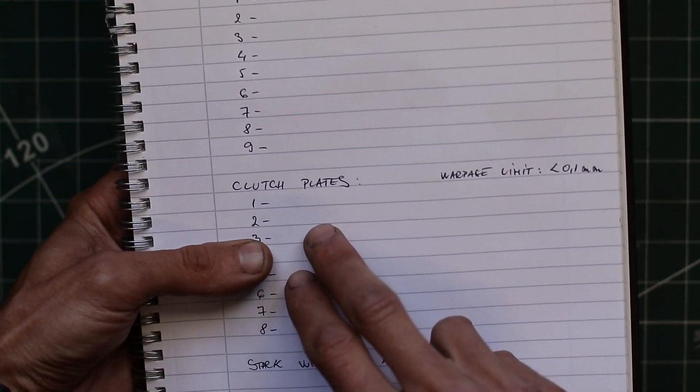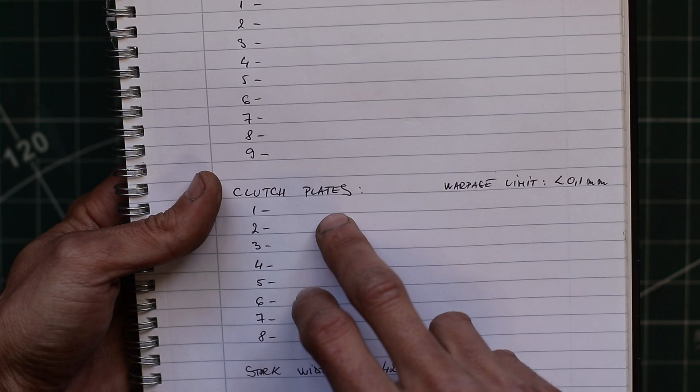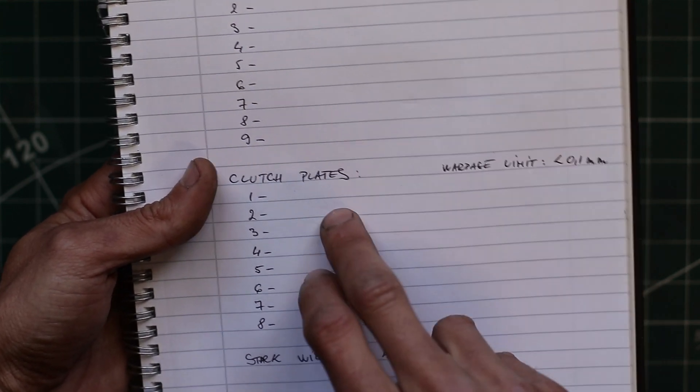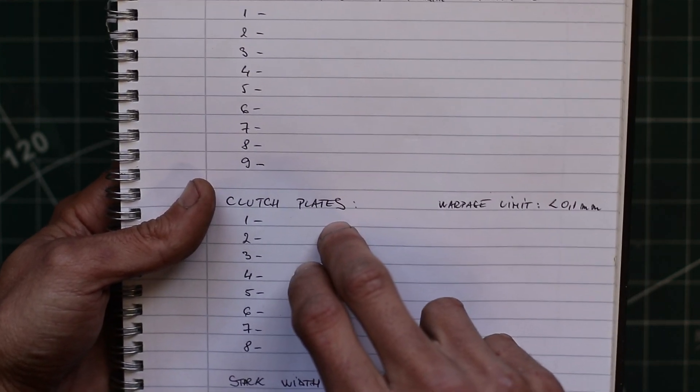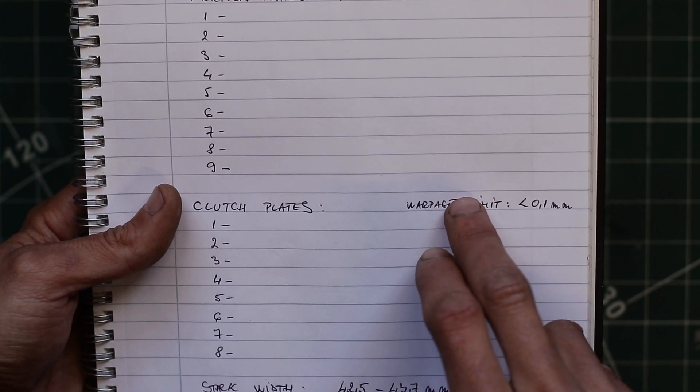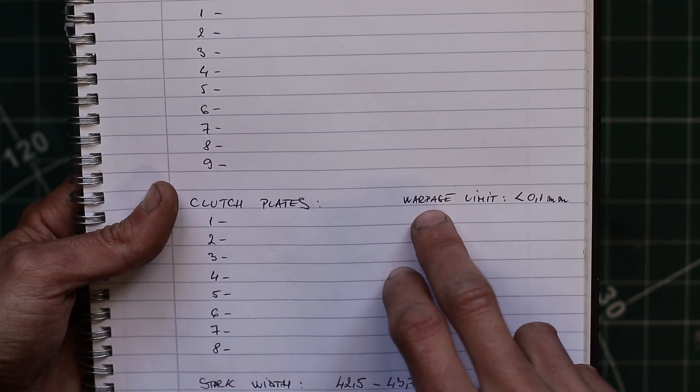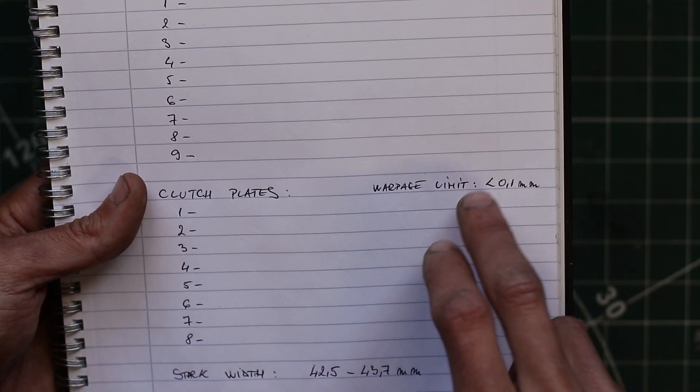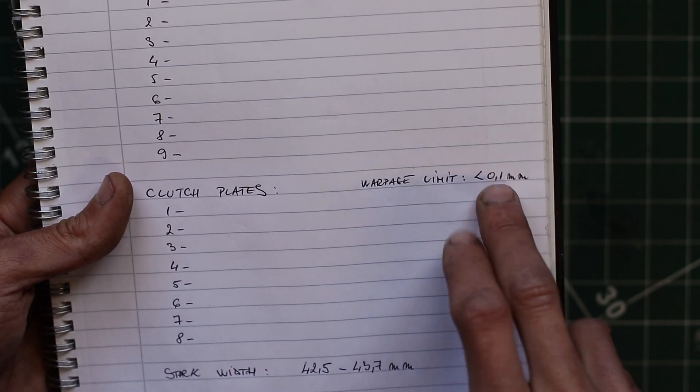The clutch plates, we don't need to measure the thickness, and I'll tell you later on why. All we need to do is measure the warpage of the plates, and it needs to be below 0.1 millimeters.